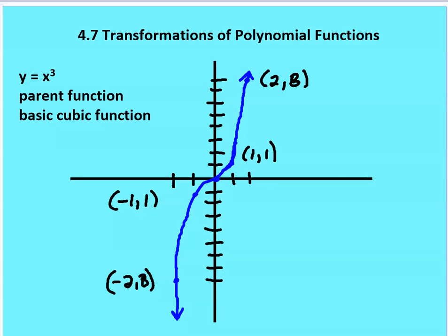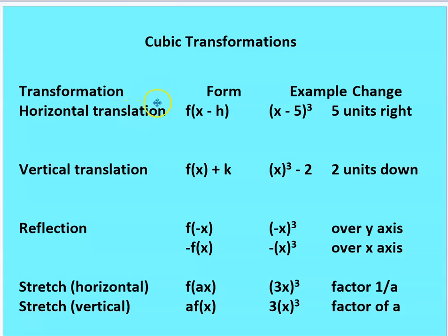We're going to talk about transforming a cubic function, going back to a, h, and k. We have a horizontal translation: f(x - h), so x minus 5 cubed goes 5 units to the right. x cubed minus 2 is 2 units down. f of negative x cubed is a reflection over the y-axis. Negative f of x is a reflection over the x-axis — the negative is on the outside of the entire function. f(ax), like 3x cubed, gives a horizontal stretch by a factor of 1 over a. And a times f of x is a vertical stretch by a factor of a.